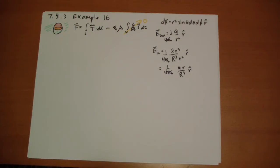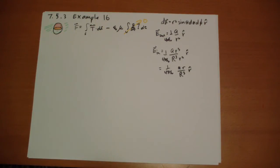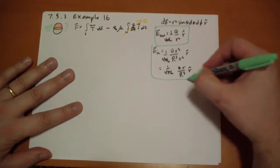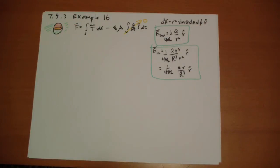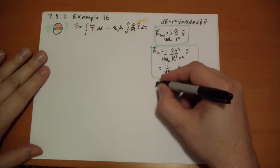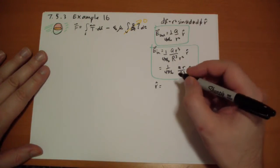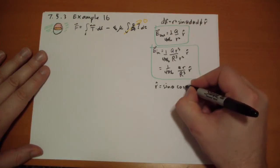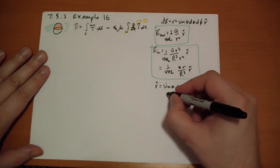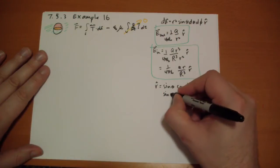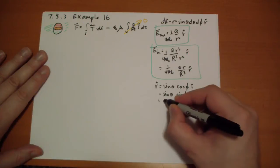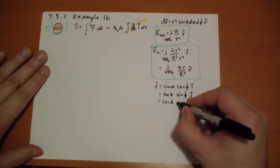So we have our electric fields. We have our dA vector. We have r hat popping up everywhere, making our life miserable. But r hat is actually not terribly complicated. So we're going to have sin theta cos phi in the i hat direction, sin theta sin phi in the j hat direction, plus cos theta in the k hat direction.